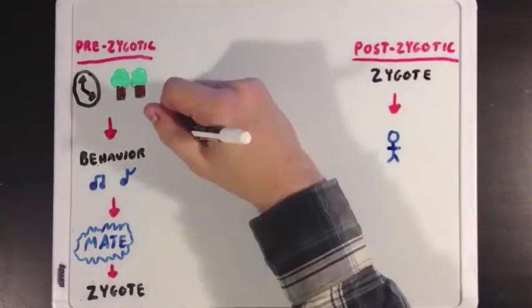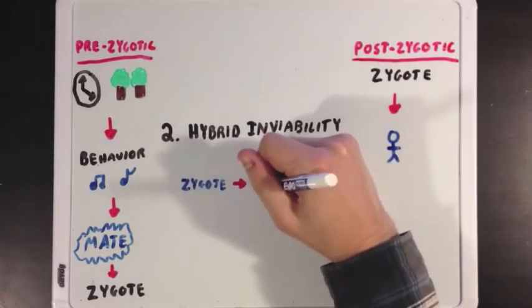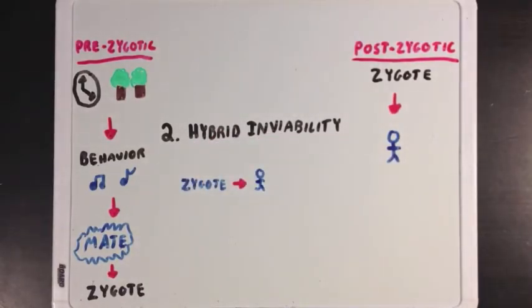Next we have hybrid inviability, which occurs when a zygote is able to grow into a mature offspring, but that offspring will have a high mortality rate and won't be able to grow into a mature adult.